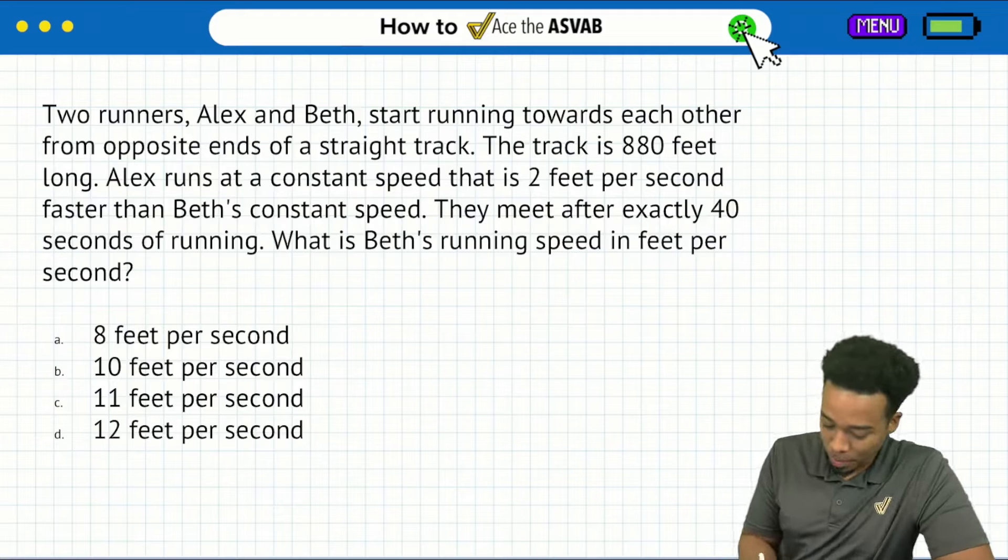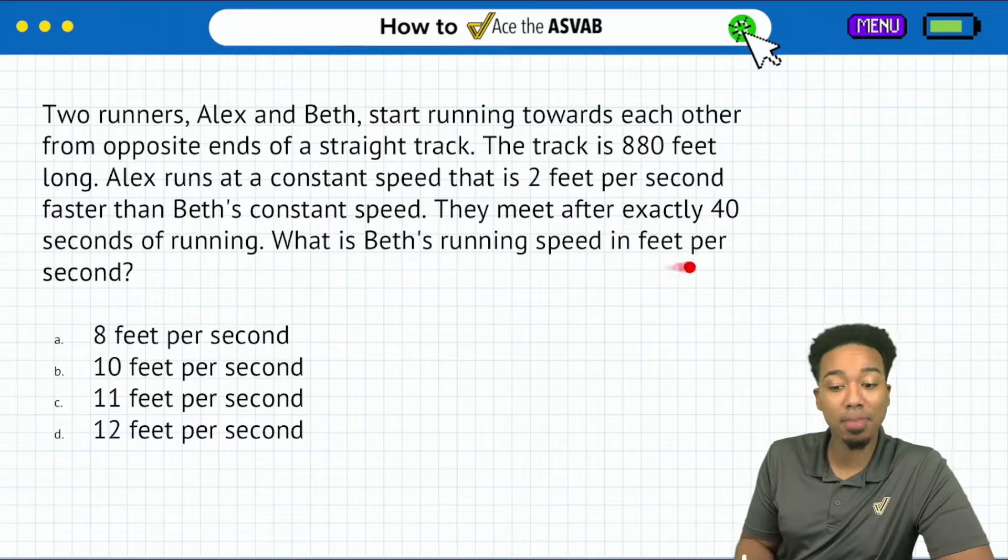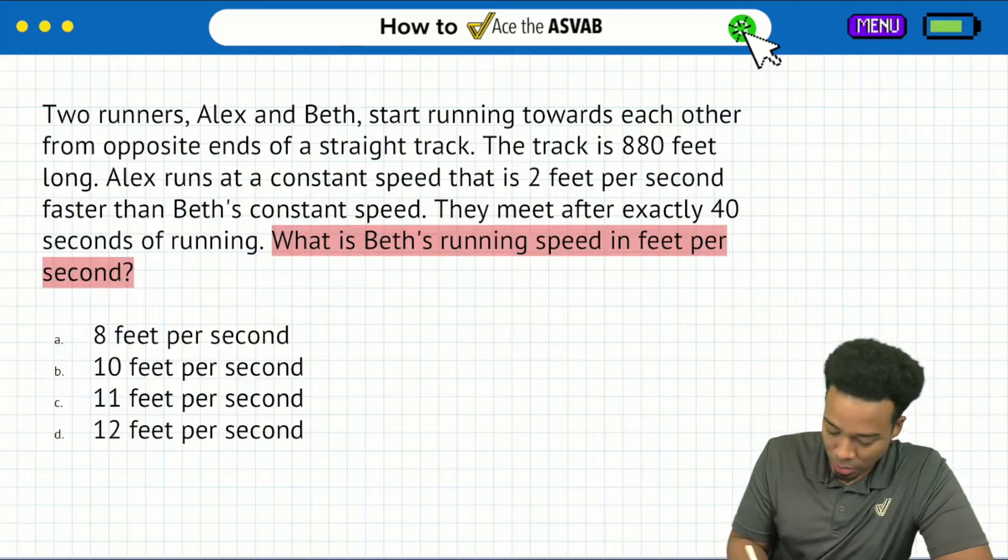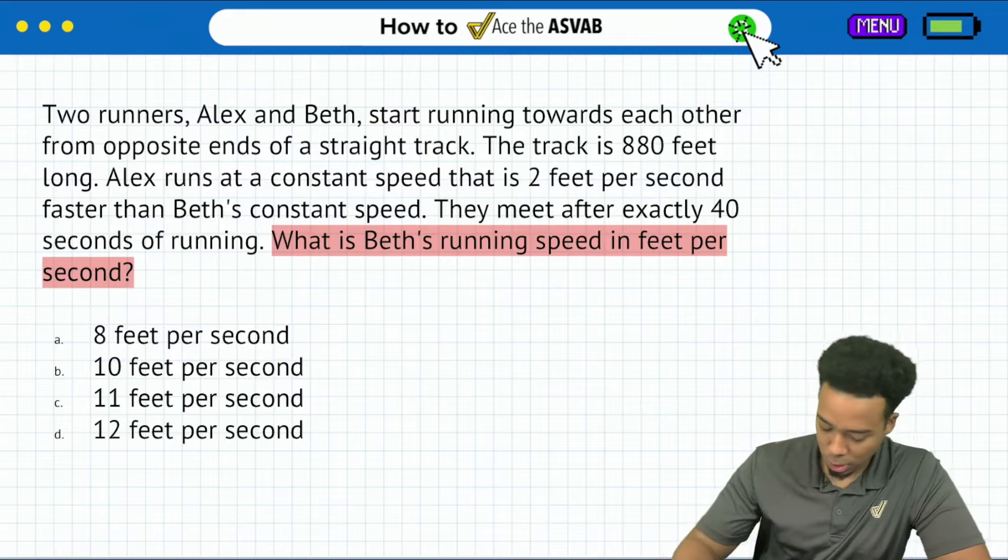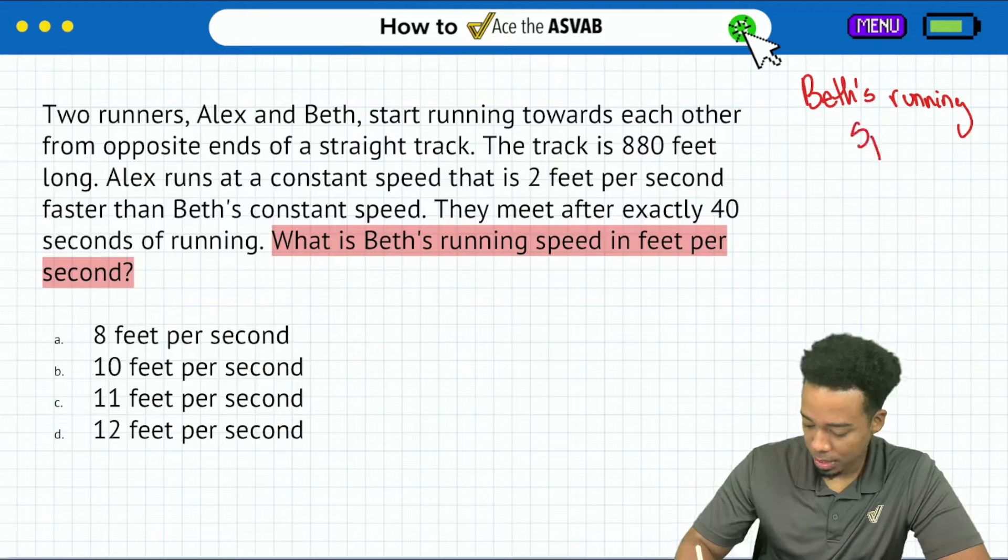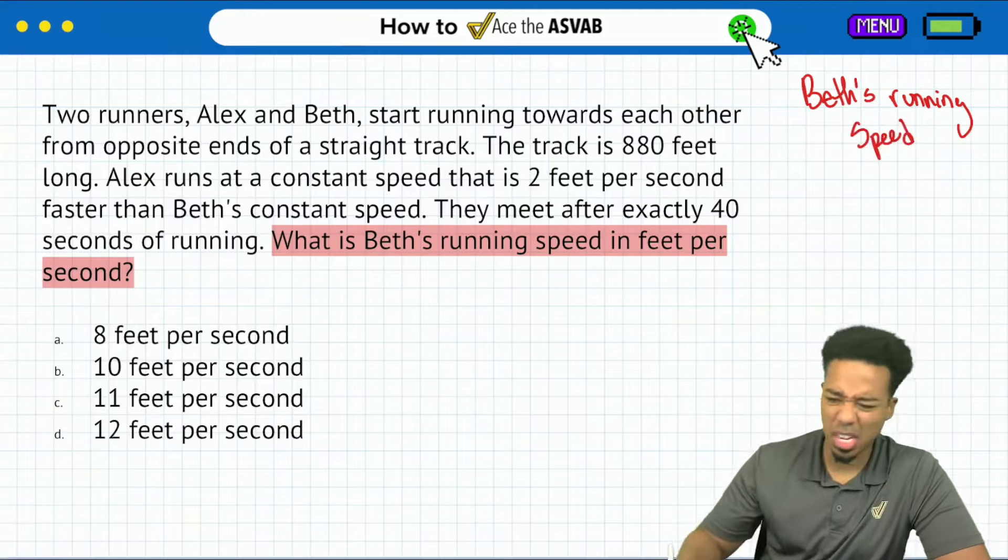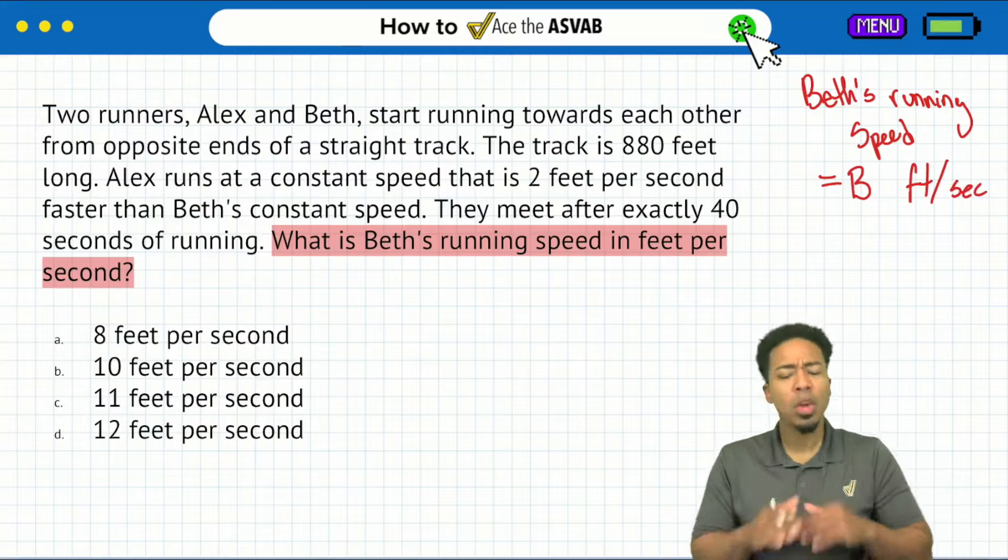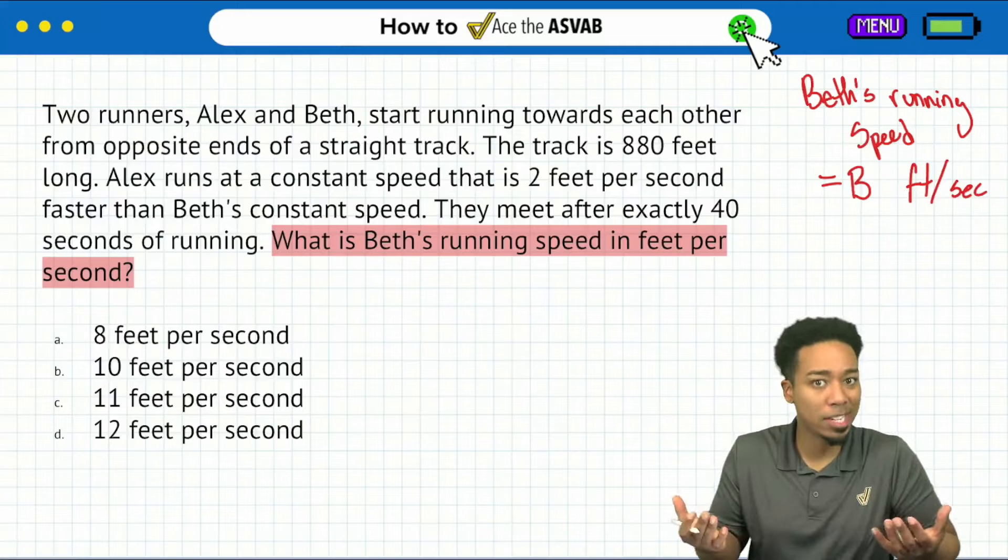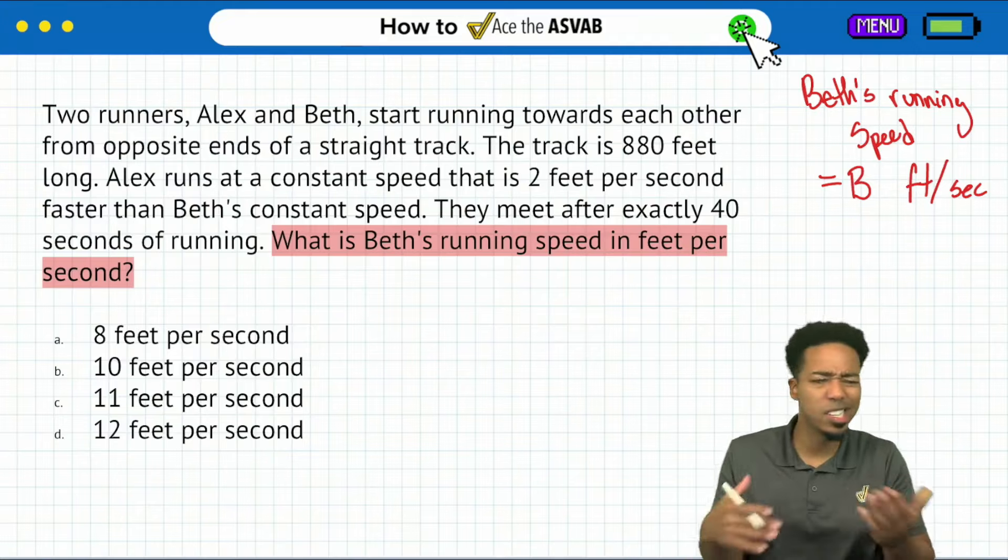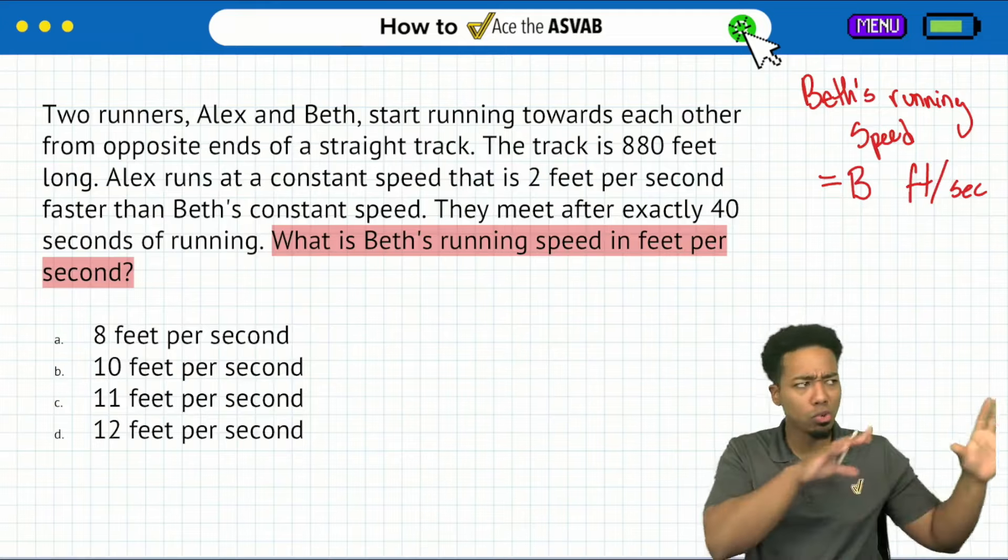Let's read the question: What is Beth's running speed in feet per second? Nice and easy. We want to know Beth's running speed in feet per second, so I'll write Beth's running speed equals B feet per second. The letter B stands for Beth's rate. Now we'll read the information to visualize what's going on.